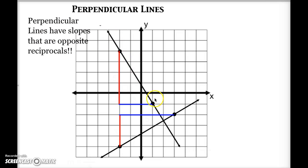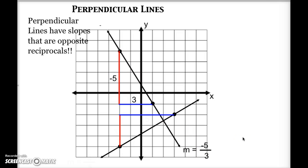The line going down has a negative slope because it's tilted downward. My rise, represented by the red line, is going to be negative 5 because I'm going down 5. My run, represented by the blue line, is positive 3. So the slope for this line is negative 5 divided by 3.